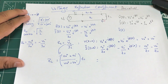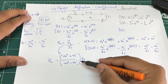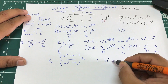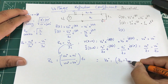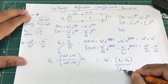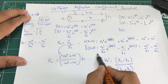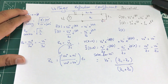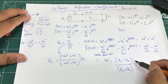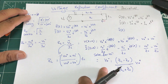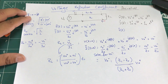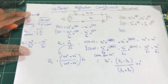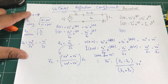Now let's solve this equation for V0-. When we solve, we get V0- / V0+ = (ZL - Z0) / (ZL + Z0). So V0- = V0+ * (ZL - Z0) / (ZL + Z0).